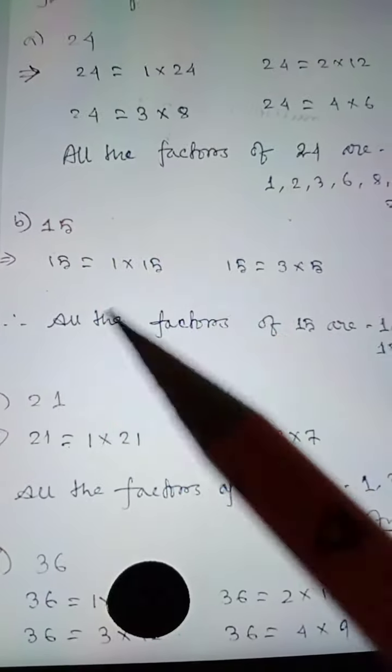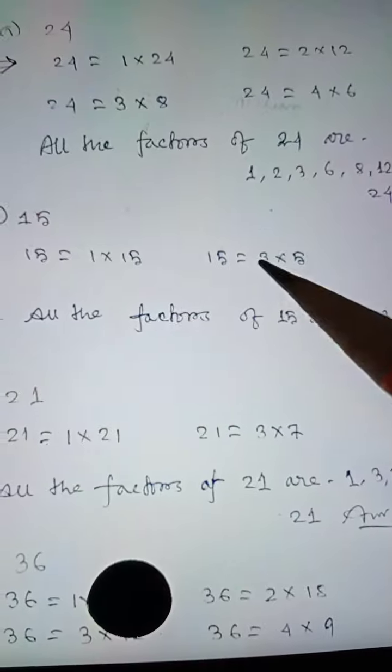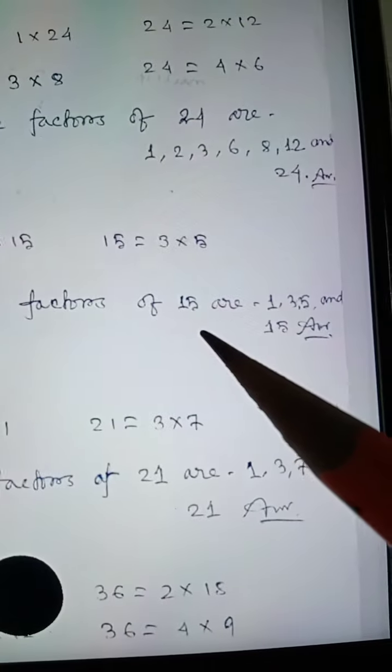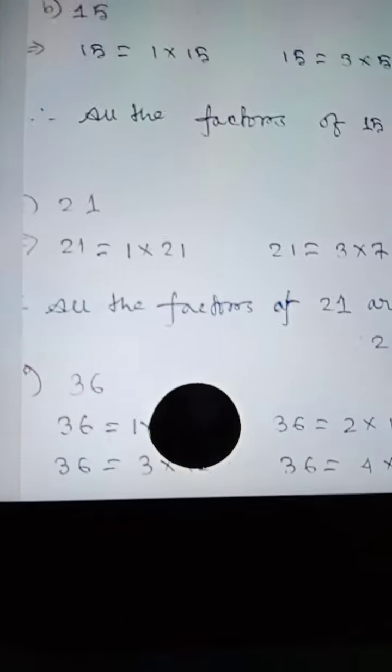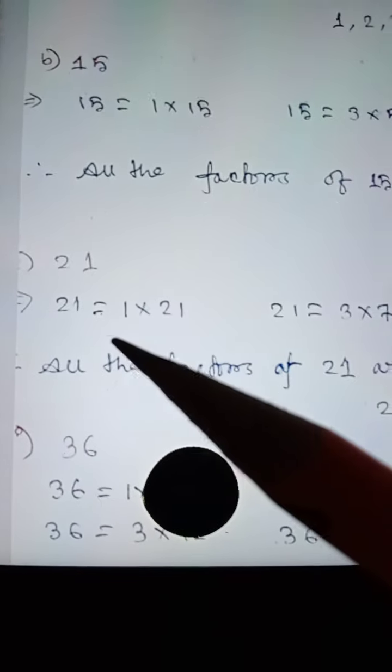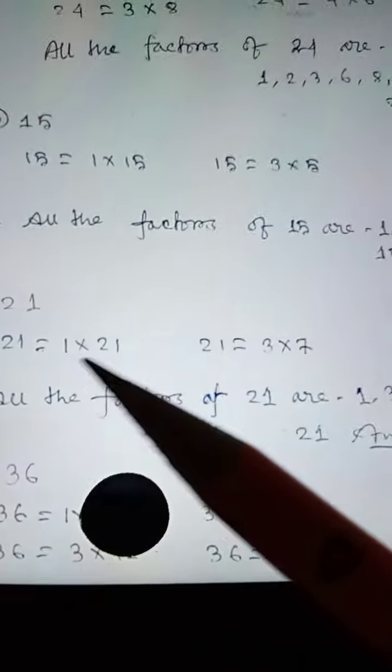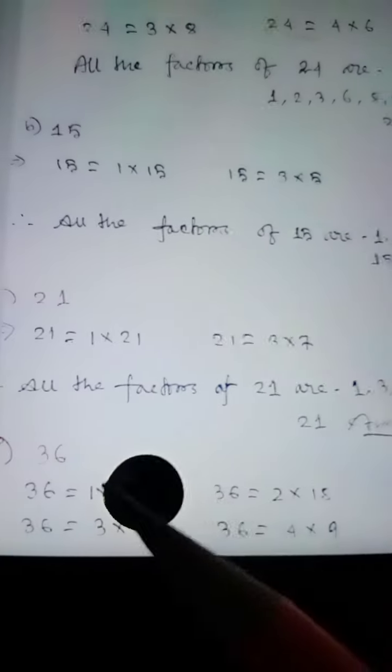Now 15. Factors: 15 equals 1 times 15 and 3 times 5. All the factors of 15 are 1, 3, 5, and 15. Next, 21. Factors of 21: 21 equals 1 times 21 and 3 times 7. All the factors of 21 are 1, 3, 7, and 21.